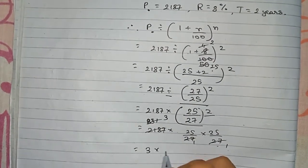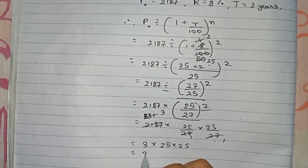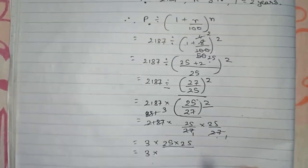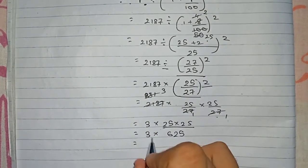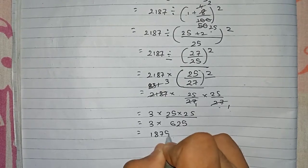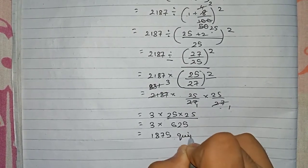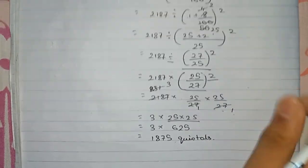So now, 3 times 25 times 25. We do it: 25 times 25 we know is 625. So now, 3 times 625 will become 1875 quintals. So therefore, you can write the production of wheat two years ago was 1875 quintals.